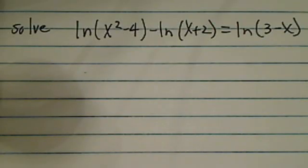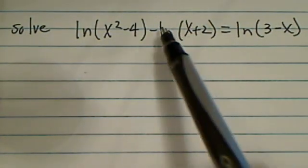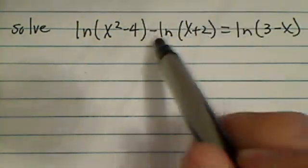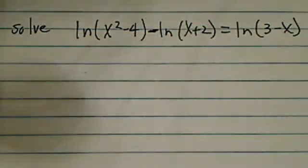Solving a natural log problem like this one, you have two ways. One is you can take exponential on both sides, but because there's a minus sign here, you have to simplify before you can go there.